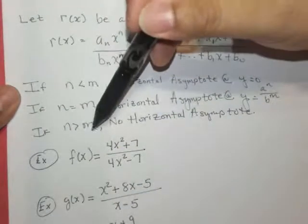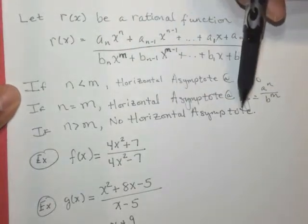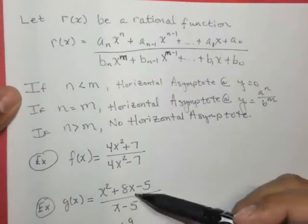And if n is greater than m, we say there is no horizontal asymptote. Let's take a look at the first example.